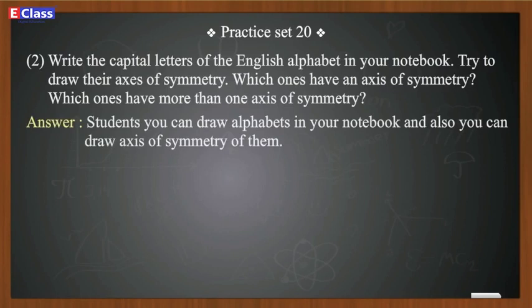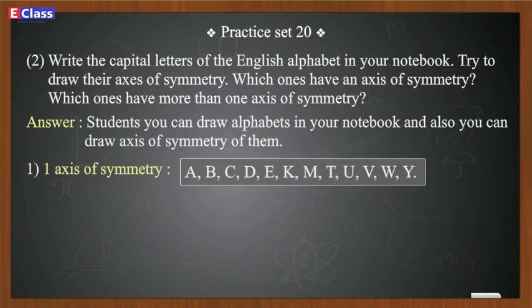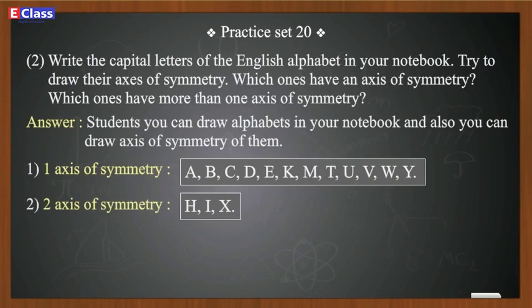Number 1: One axis of symmetry - A, B, C, D, E, K, M, T, U, V, W, Y. Number 2: Two axes of symmetry - H, I, X. Number 3: Infinite number of axes of symmetry - O.